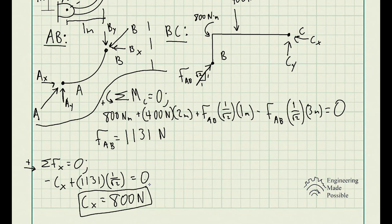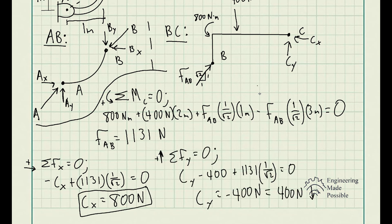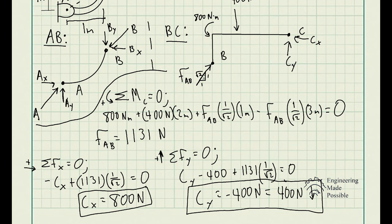You can double-check by doing the sum of moments with respect to point B for this member — you'll see that BX equals BY, confirming a one-to-one ratio and the same angle. And that's how you solve problems dealing with frames. You can solve for reactionary forces using the entire structure, but sometimes it's simpler to split the structure into its respective members and solve accordingly.